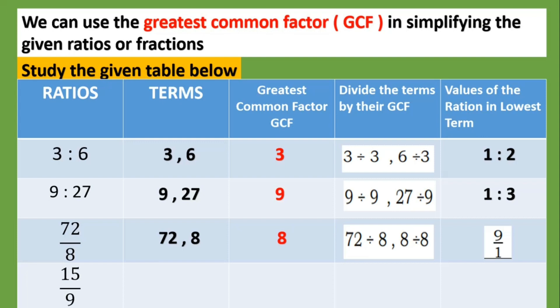Next is 15:9. The terms are fifteen and nine. Greatest common factor is three. Divide the terms by their GCF, so fifteen divided by three, and nine divided by three. So the lowest term would be 5:3.